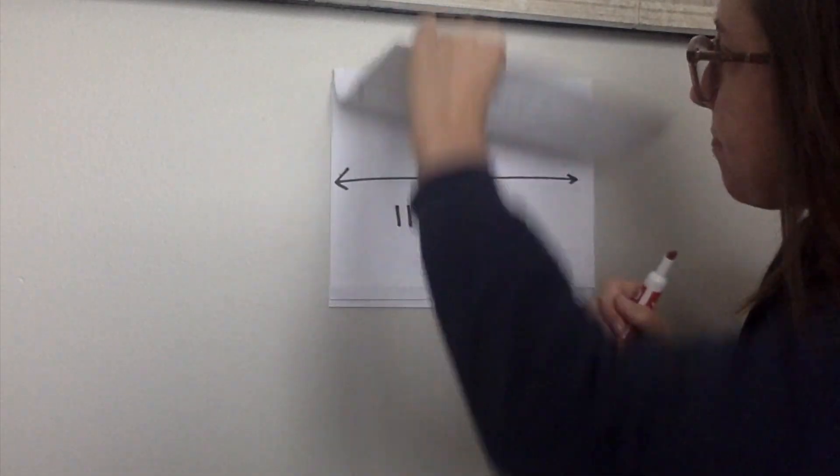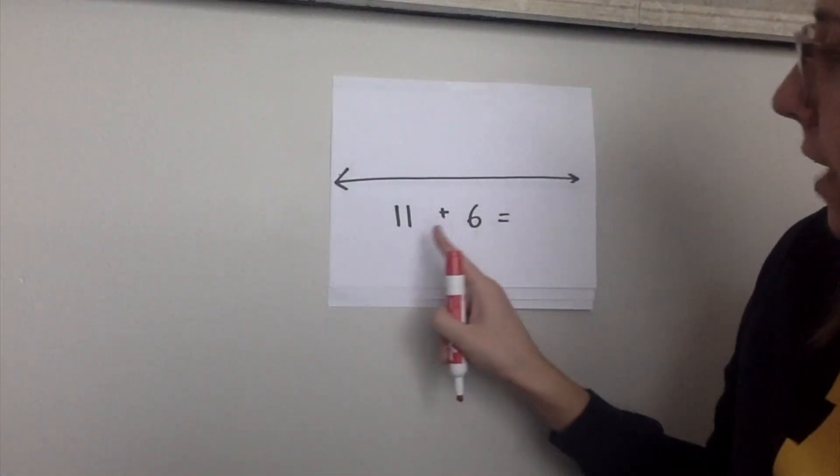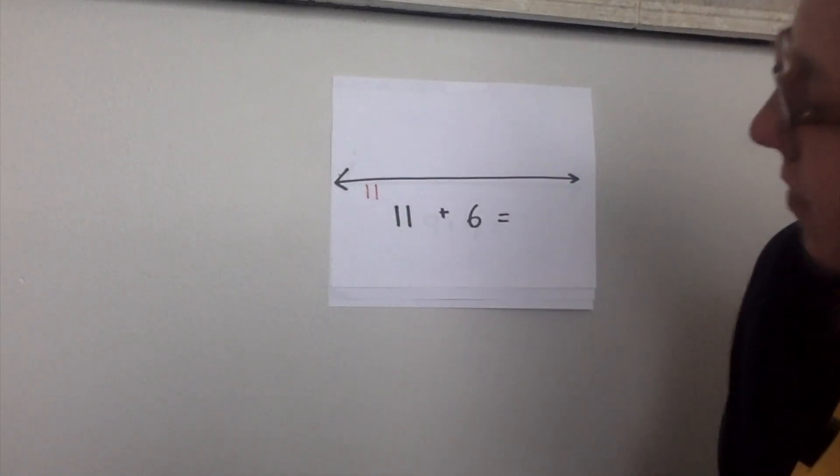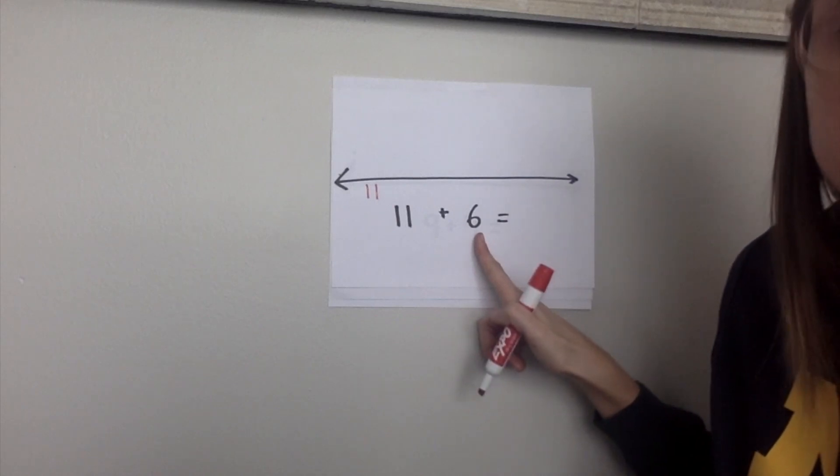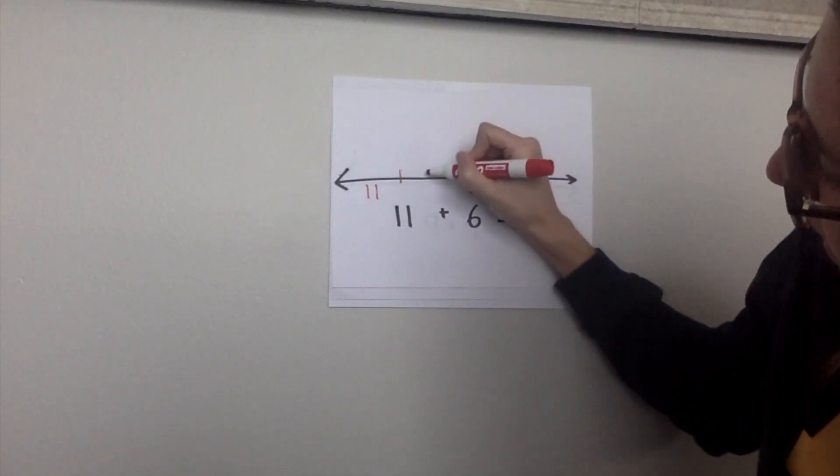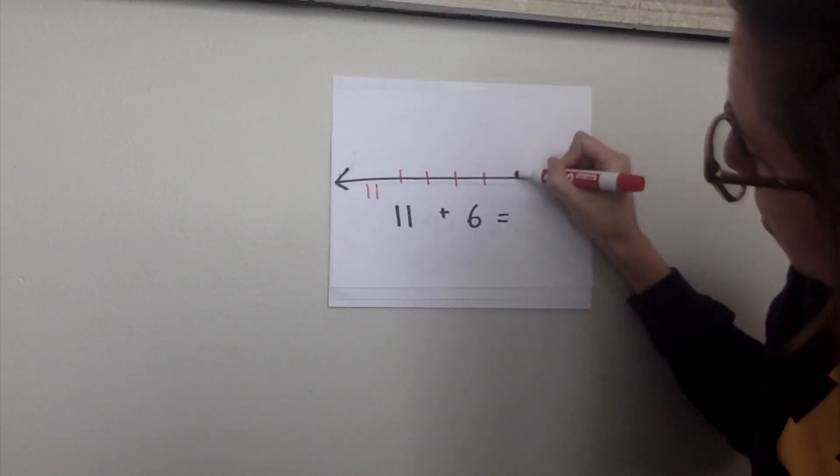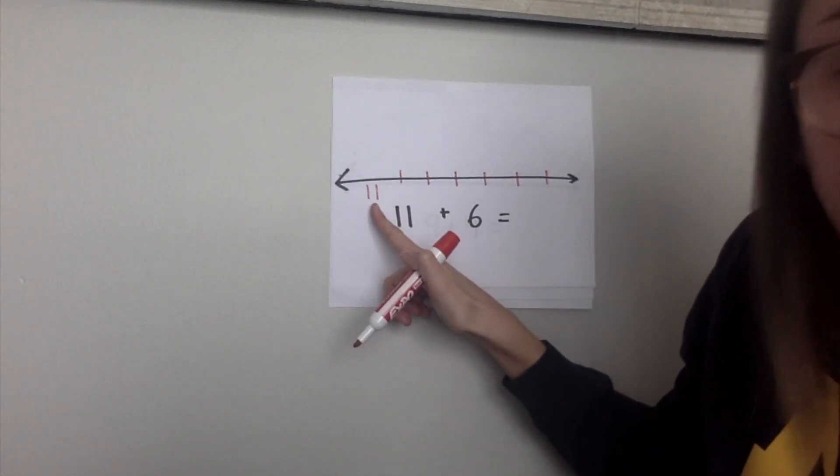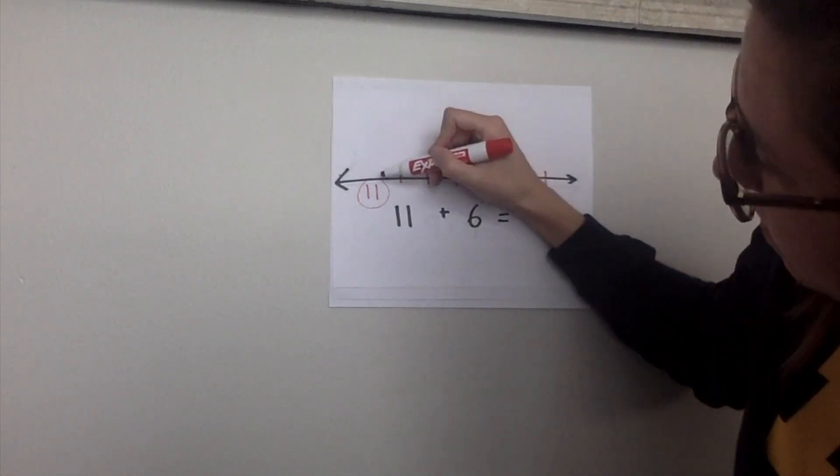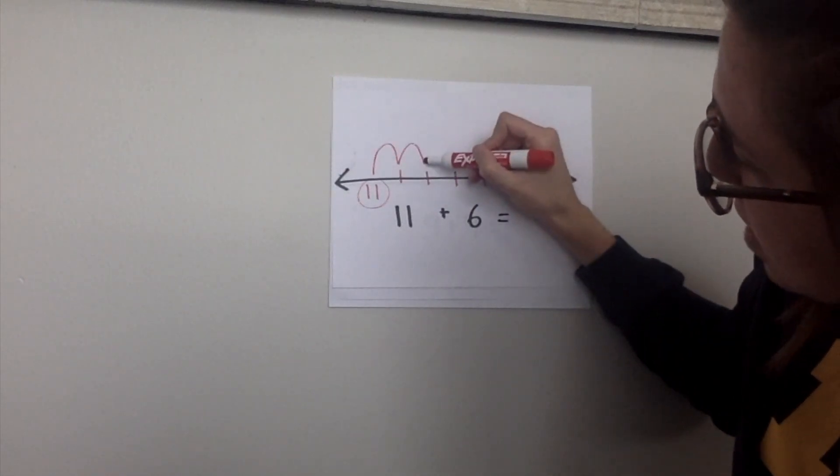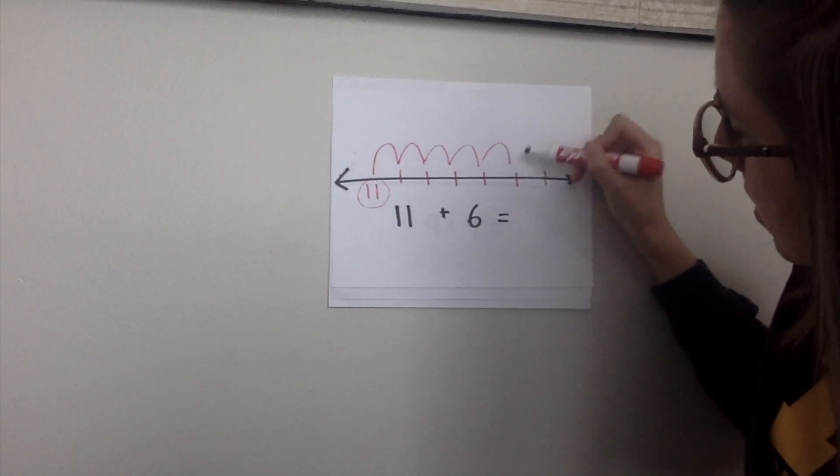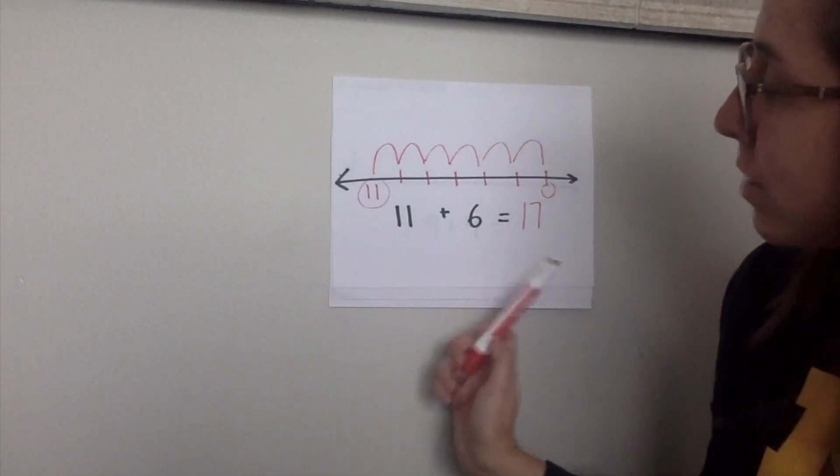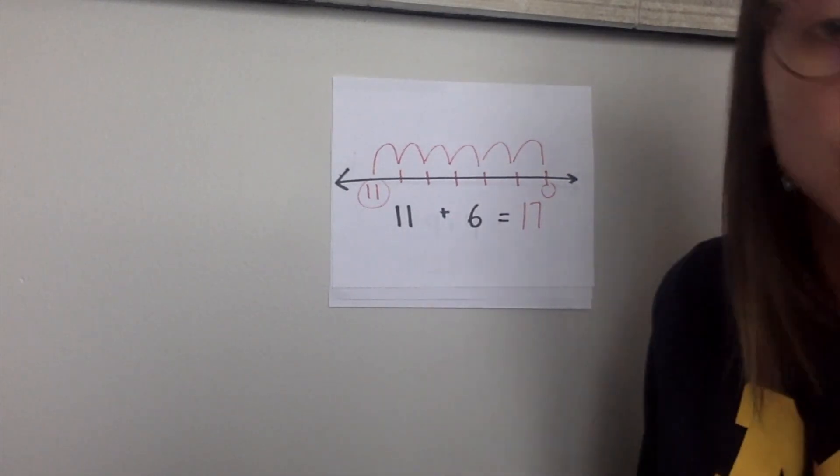Let's try another one together. This is the problem, 11 plus 6. So the first thing that I'm going to do if I don't have a number line is draw an 11. Then how many dashes am I going to draw? That's right, 6. Count with me. 1, 2, 3, 4, 5, 6. I drew my 6 dashes. Now I'm going to count on from 11. So starting on 11, let's keep counting. 12, 13, 14, 15, 16, 17. I landed on 17. Was there actually a 17 there? No, but when I counted on from 11 with 6 more, I knew the answer was 17.